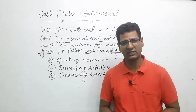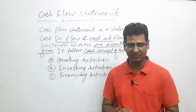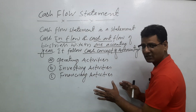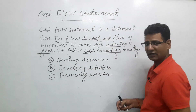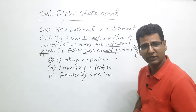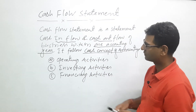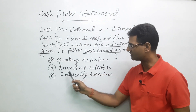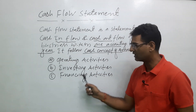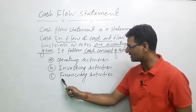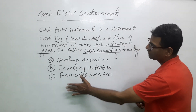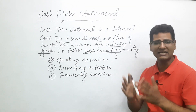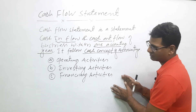There are three major activities in the cash flow statement. The first is operating activities, the second is investing activities, and the third is financing activities. From these three activities we calculate how much cash came in and how much cash went out.